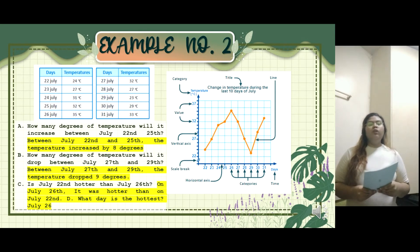In July 22, 24 degrees Celsius. In 23, 27 degrees Celsius. In 24, 31 degrees Celsius. In 25, 32 degrees Celsius. In 26, 35 degrees Celsius. In 27, 32 degrees Celsius. In 28, 27 degrees Celsius. In 29, 23 degrees Celsius. In 30, 29 degrees Celsius. And in July 31, 33 degrees Celsius.